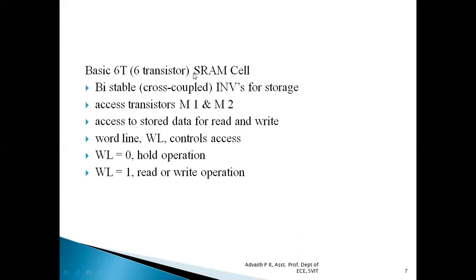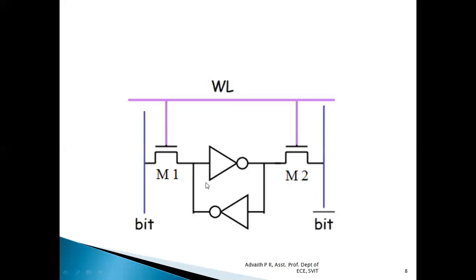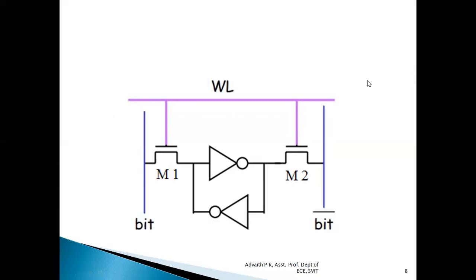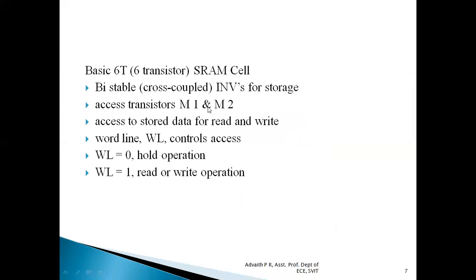The basic six-transistor SRAM cell consists of the following elements. We use two inverters to store the data. Each inverter consists of two MOSFETs — a P-channel MOSFET and an N-channel MOSFET. Two inverters give us four MOSFETs, plus the fifth MOSFET M1 and sixth MOSFET M2, giving us six transistors total. We use bistable cross-coupled inverters for storage of logic level 0 or logic level 1. We also have two access transistors M1 and M2, used to access stored data for both read and write operations. Both M1 and M2 are controlled by the word line.